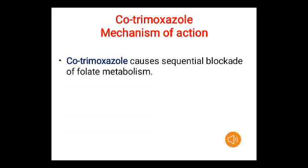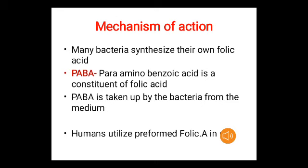The mechanism of action of cotrimoxazole involves sequential blockade of bacterial folate metabolism. Many bacteria synthesize their own folic acid, taking para-aminobenzoic acid from the medium, whereas humans utilize preformed folic acid from the diet.